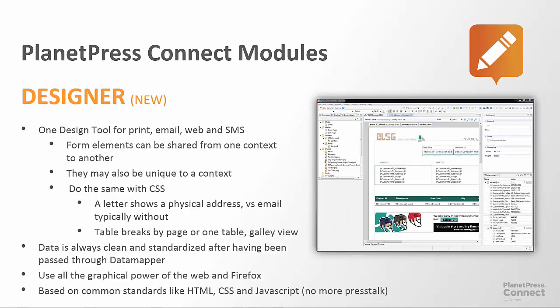The last of the modules is the new PlanetPress Connect Designer. This is an all-new interface and it serves as the design tool for print, for email, and for web pages — all done in the same design tool. One single tool for all those outputs, we call them contexts. In the Designer it allows you to share elements from one context to another, or to have unique elements — maybe there's an animation that appears on a web page that's not present on the print job. You can take advantage of new wizards for pagination or page overflow. You could use a wizard to build a table that'll automatically break from page to page on your print context, but use that same table in an email or on a web page as one long table with a scroll bar on the side.